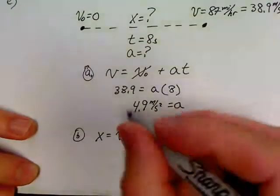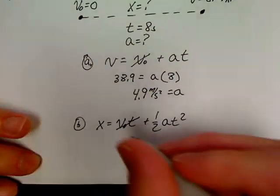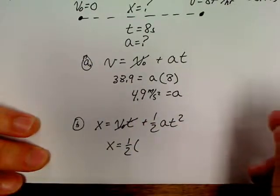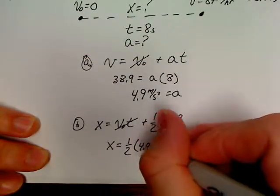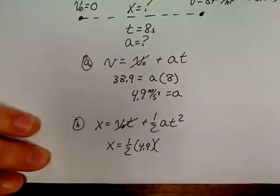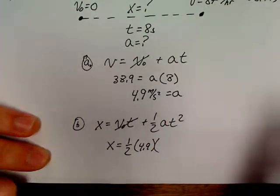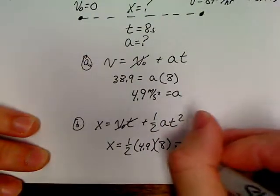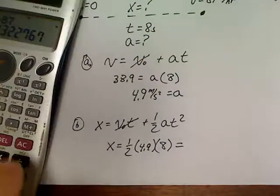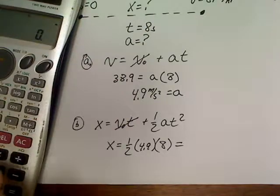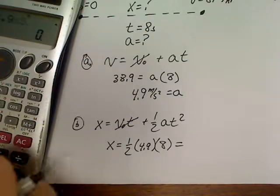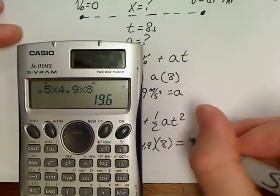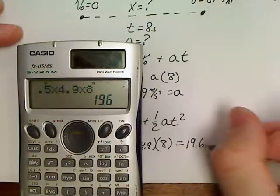V₀ was 0. So, we can just mark out V₀T. So, we've got X equals 1/2 of A, which is, in this case, 4.9 meters per second squared, times we have a time of 8 seconds. And this is going to be equal to 19.6 meters for a displacement in this problem.